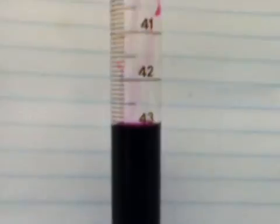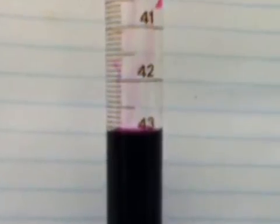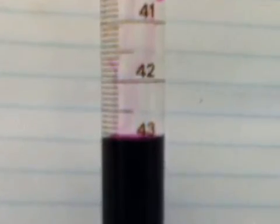The scale on the burette should always be read downways. In this case the reading is 42.95.